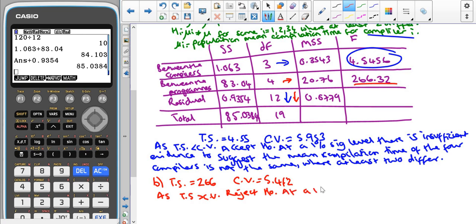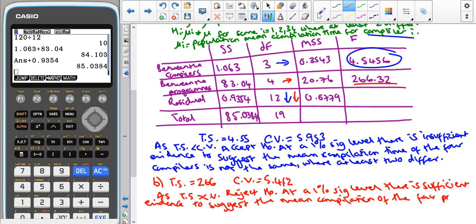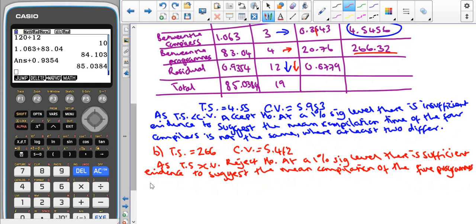Which means that at a one percent significance level, there is sufficient evidence to suggest the mean compilation time of the five programs is not the same where at least two differ.